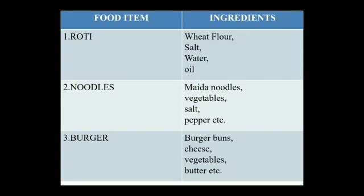Second were our noodles. Noodles' ingredients specifically contain the dry maida noodles which we get in packets. Then we add yummy and nutritious vegetables, salt, pepper, then various types of sauces, etc. Third was our lip-smacking burger. The ingredients of a burger contain basically burger buns or breads, cheese, vegetables, butter and various other ingredients in fixed quantities.